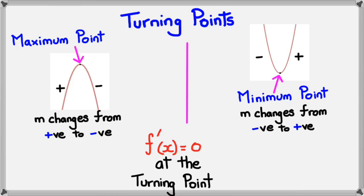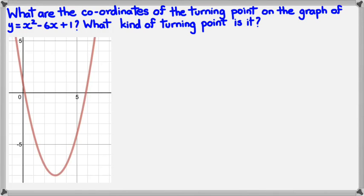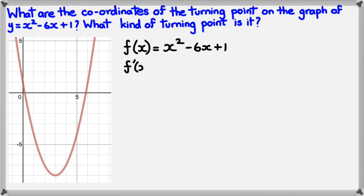We'll have a quick example of turning points. What are the coordinates of the turning point on the graph of y equals x squared minus 6x plus 1? And I also want to know what kind of turning point it is. Let's have a look at the graph of x squared minus 6x plus 1 — this is what the graph would look like. We've got to differentiate this function to get the gradient function. So f dash of x would equal 2x minus 6.